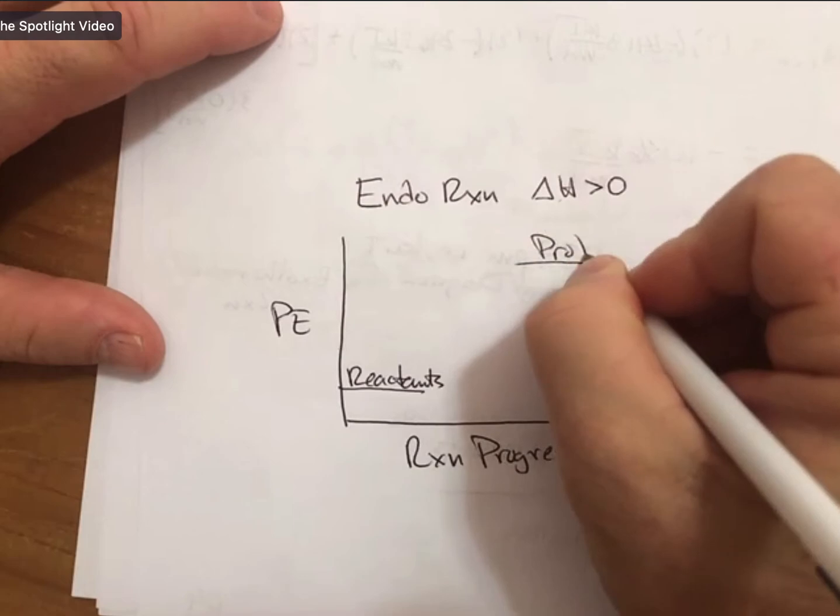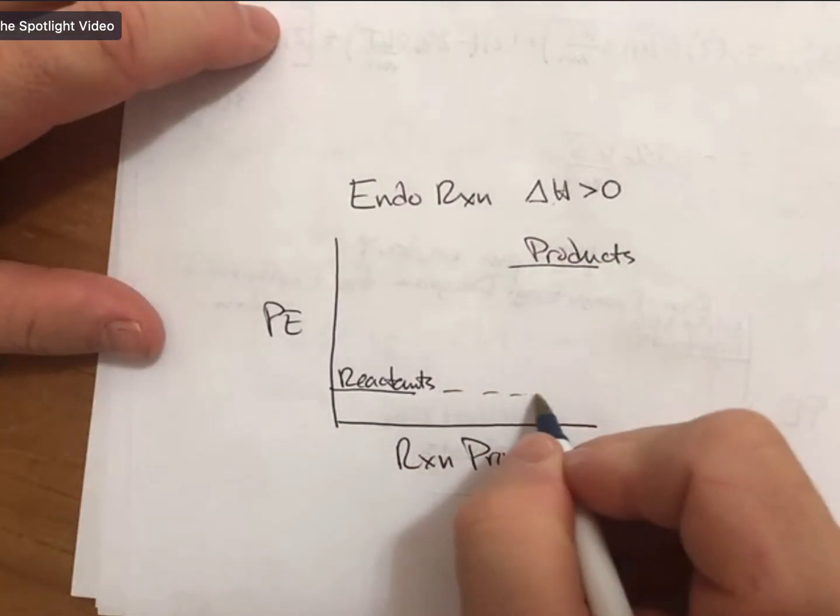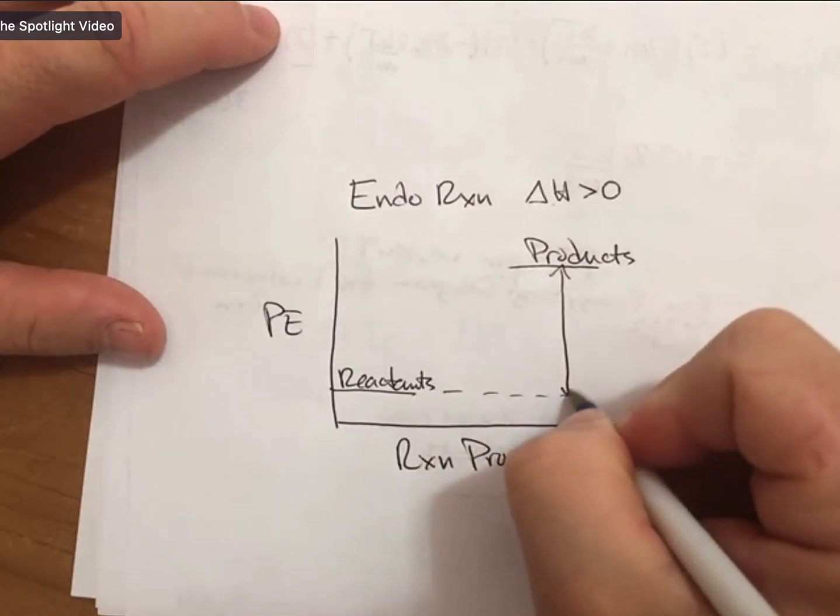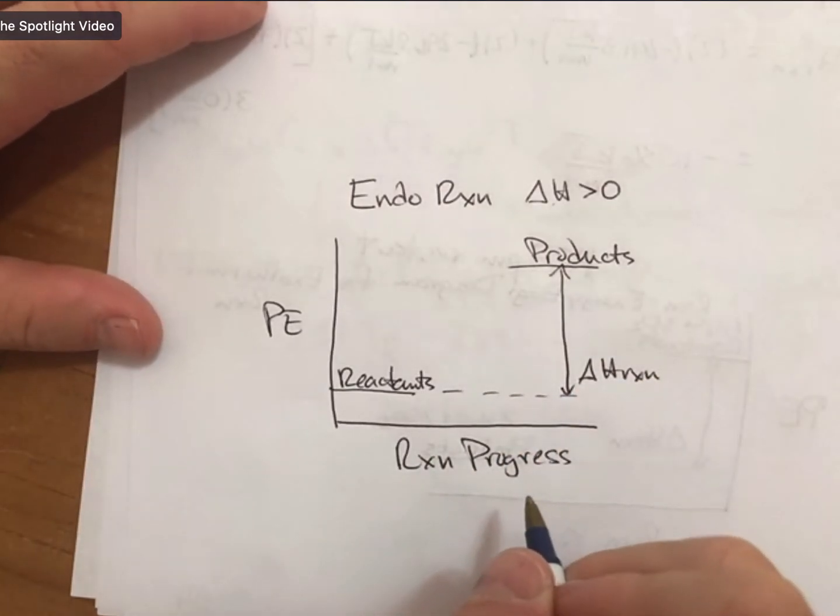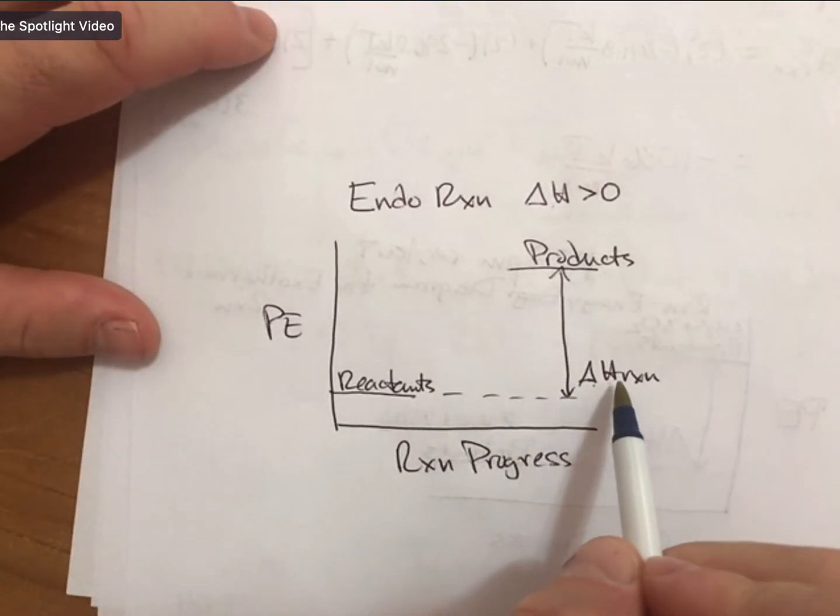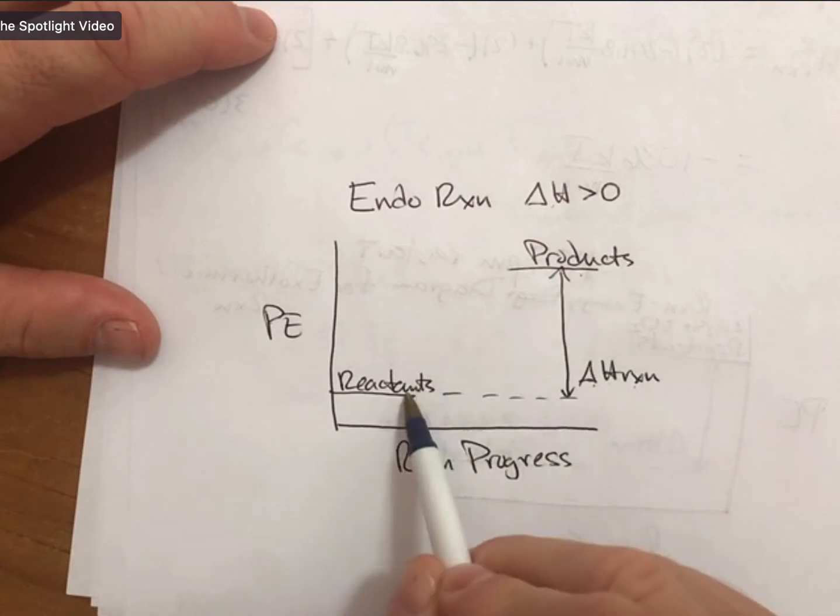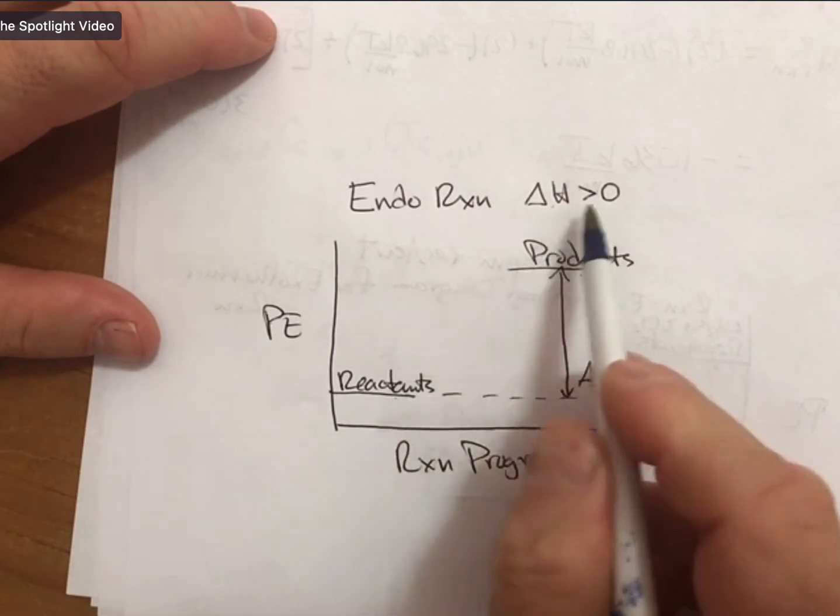And my products are up top, and then the difference is delta H reaction. And again, just to say this: whenever we calculate delta H reaction, it's always products minus reactants. A bigger number minus a smaller number will be positive.